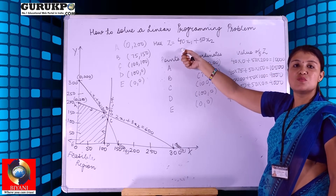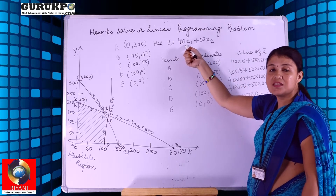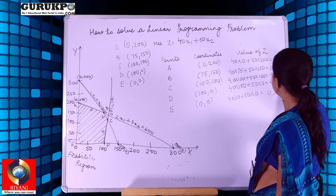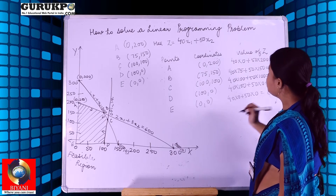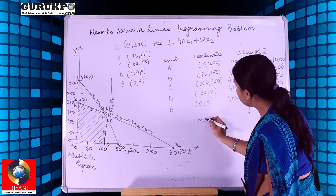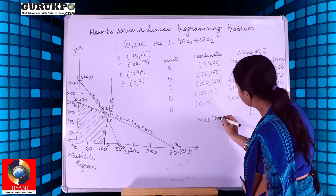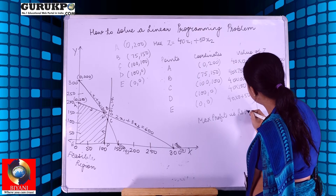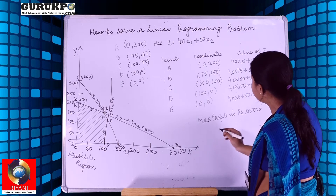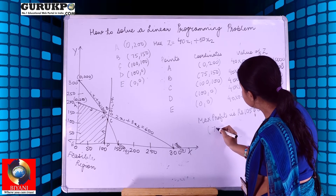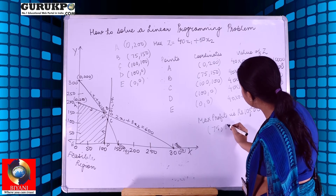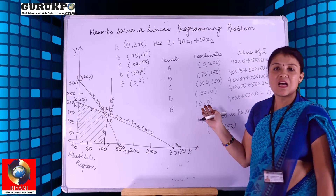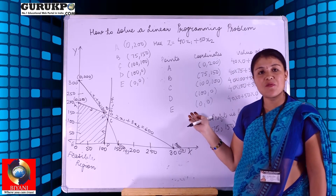Since the objective is maximization, we identify the highest value, which is 10,500. The maximum profit is ₹10,500, achieved at coordinates x1 = 75 and x2 = 150. This is how we have solved the linear programming problem.